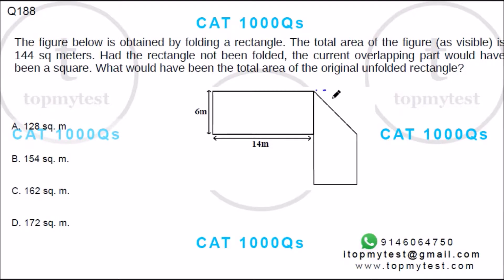Okay, the overlapping part would have been a square, and this portion will end up here. So this portion will end up here. Right, what would have been the total area of the original unfolded rectangle?